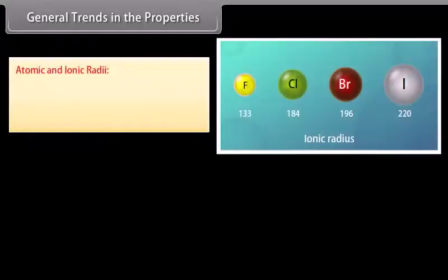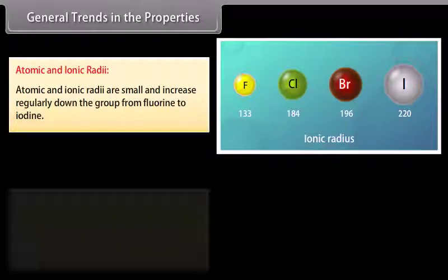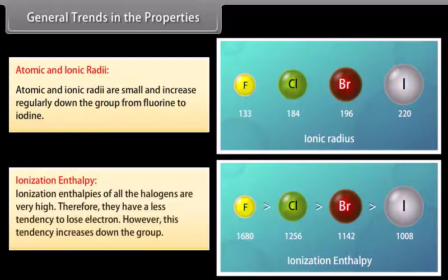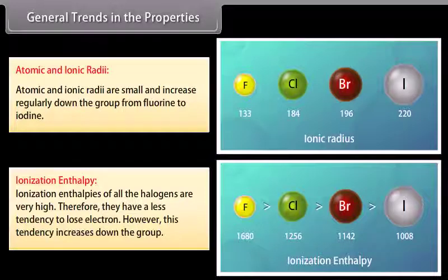General trends in properties: Atomic and ionic radii are small and increase regularly down the group from fluorine to iodine, because new electronic shells are added. Ionization enthalpies of all halogens are very high; therefore they have a lesser tendency to lose electrons. However, this tendency increases down the group because the distance of the valence shell from the nucleus increases.